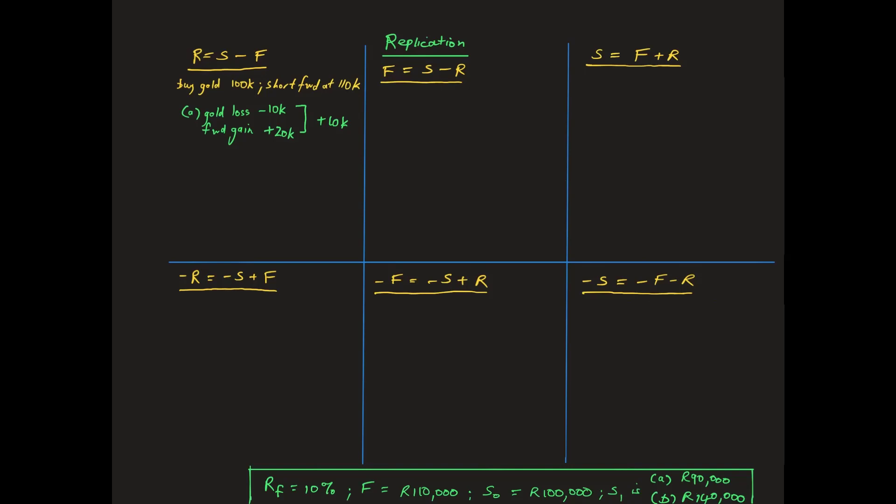When the R10,000 loss on the gold and the R20,000 gain on the forward are added together, the result is a net gain of R10,000, which is exactly the same as a 10% return over one year on the risk-free asset. This demonstrates a successful replication.